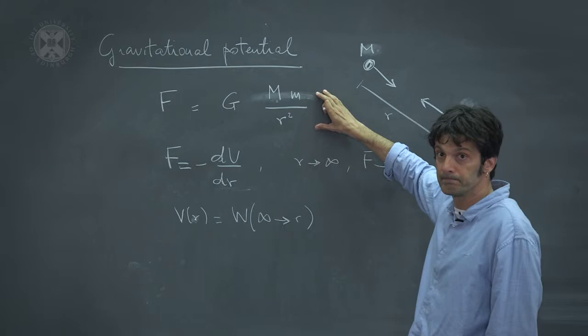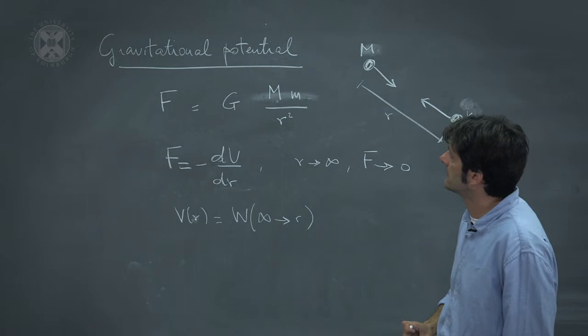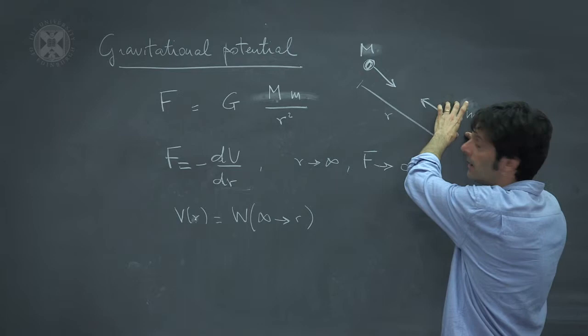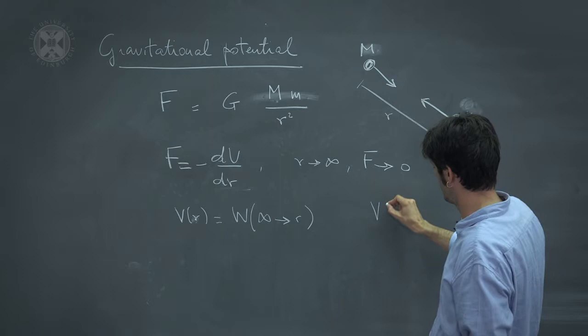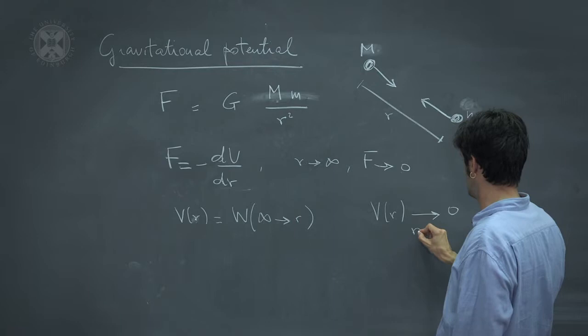So we are going to assume that when the distance is infinite, there is no potential acting on little m. So V of r goes to zero when r goes to infinity.